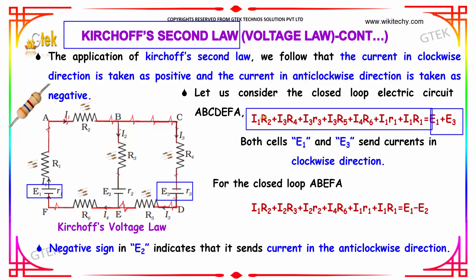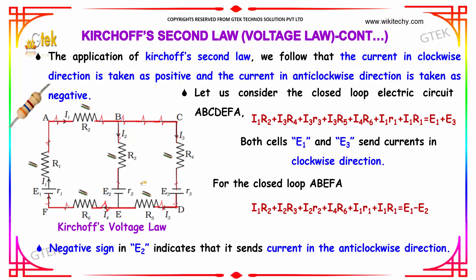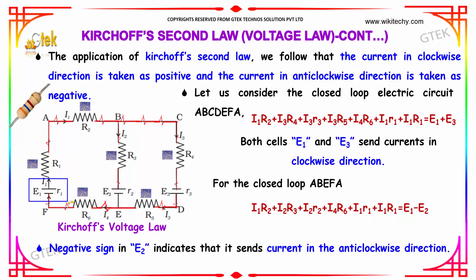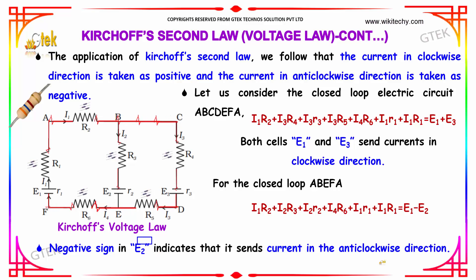Moving on to another closed loop A, B, E, F, A: I1·R2 + I2·R3 + I2·R2 + I4·R6 + I1·R1 = E1 − E2. Here E2 appears with a negative sign, indicating that E2 is sending current in the anticlockwise (opposite) direction.